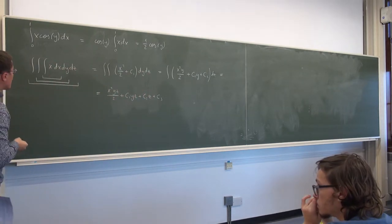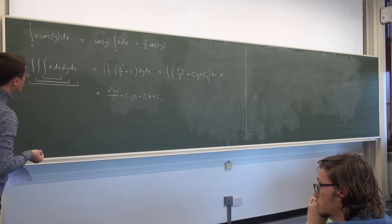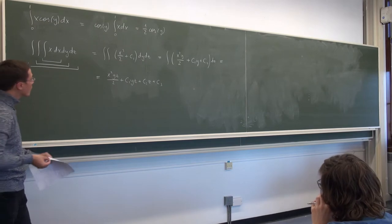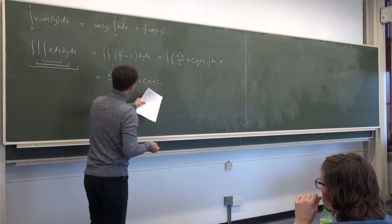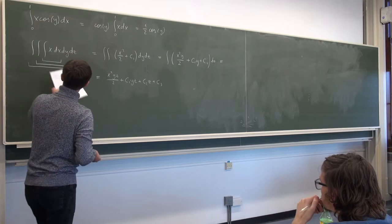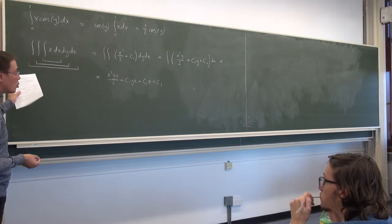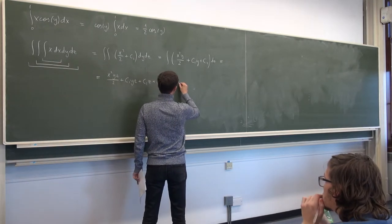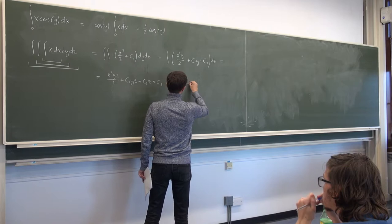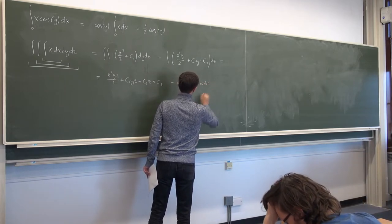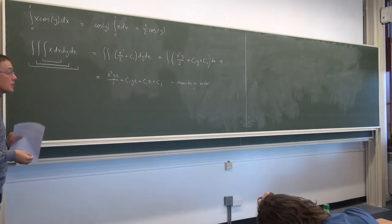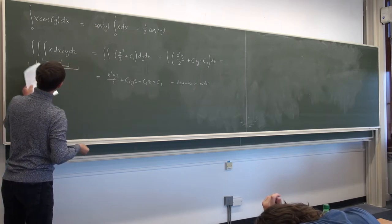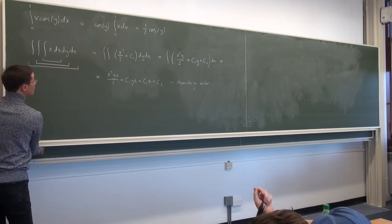If we differentiate this back — first with respect to z, then with respect to y, then with respect to x — we recover our original x. Notice that this expression actually depends on the order of integration. If we took the integrals in a different order, we would get a different expression, so it is important to follow the conventional order.